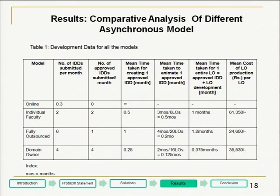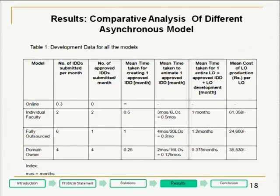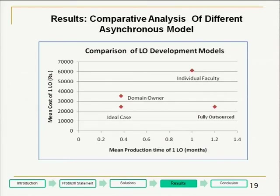In the comparative analysis of the four models, the domain owner model has emerged as the most successful. The mean production time — total time for IDD and animation production — fell to 0.375 months. Though the cost increased compared to the fully outsourced model, making a trade-off between mean cost and mean total production time, the domain owner model comes closest to the ideal case, defined as the minimum cost and minimum mean production time taken across all four models.